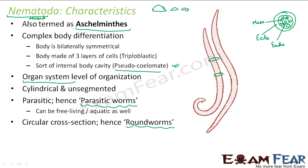Talking about whether they are parasitic or not — mostly they are free-living. An example of a parasitic nematode would be the guinea worm, which is parasitic on human beings. Another example is the filarial worm, which causes the disease filariasis. These worms stay inside the human body, receive nutrition from it, and at the same time cause disease.